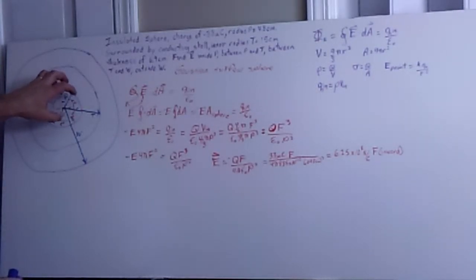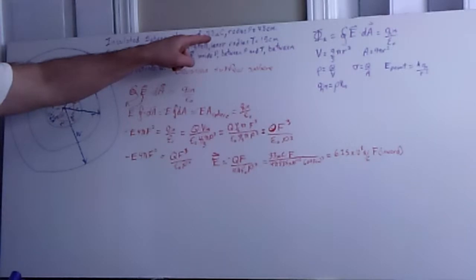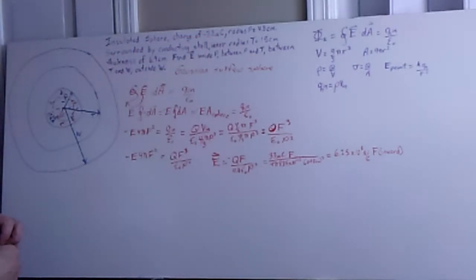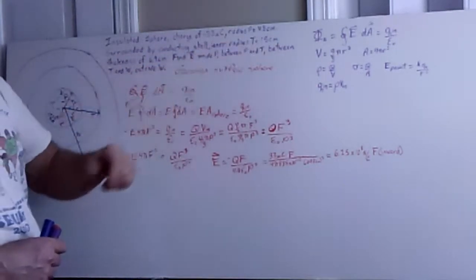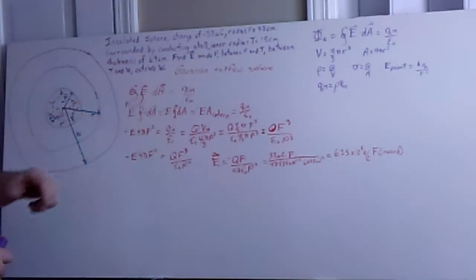What I have is an insulated sphere that's charged with minus 33 microcoulombs and that has a radius p of 7.8 centimeters, and it's surrounded by another spherical shell and that one turns out to be a conducting shell. It has an inner radius of 15 centimeters, a thickness of 6.9 centimeters.